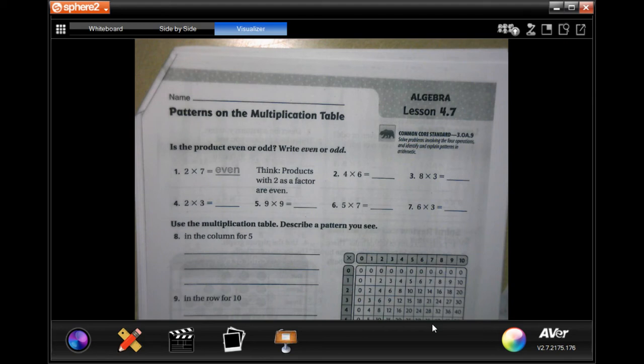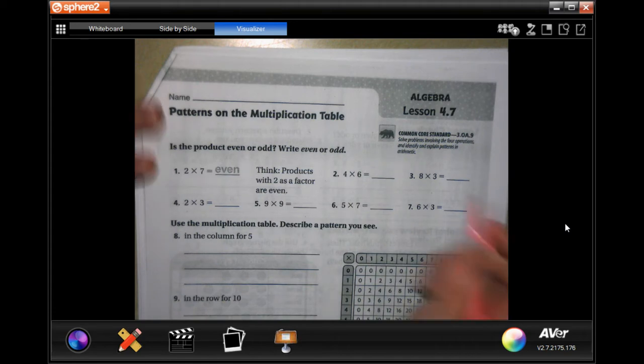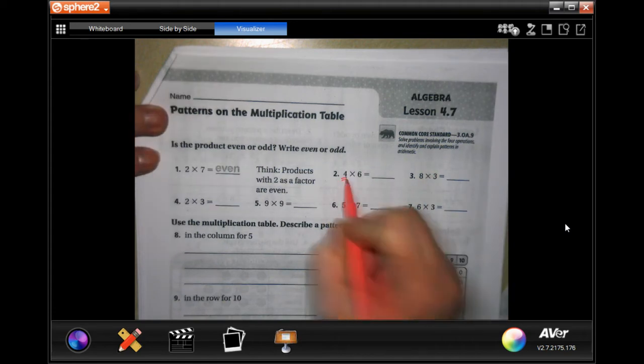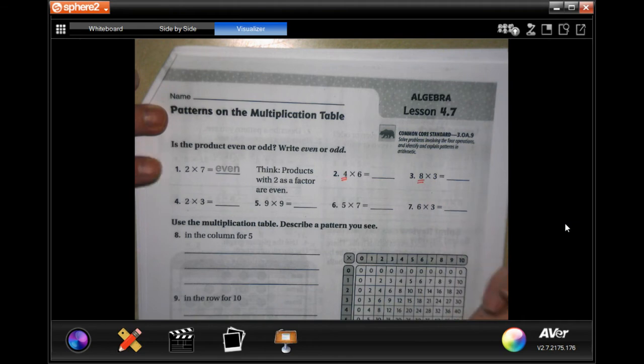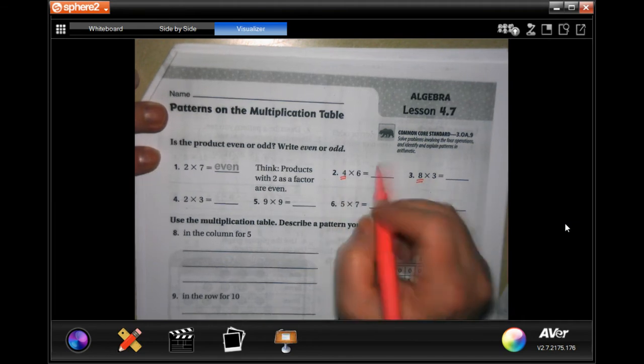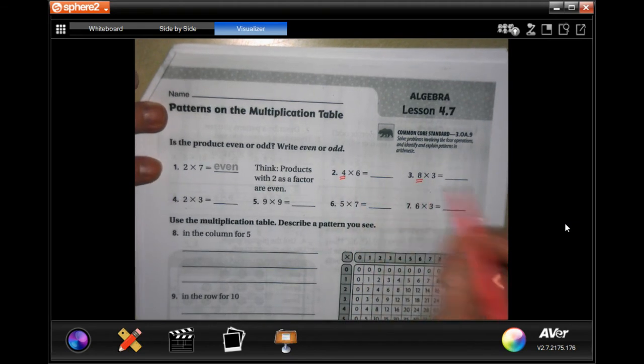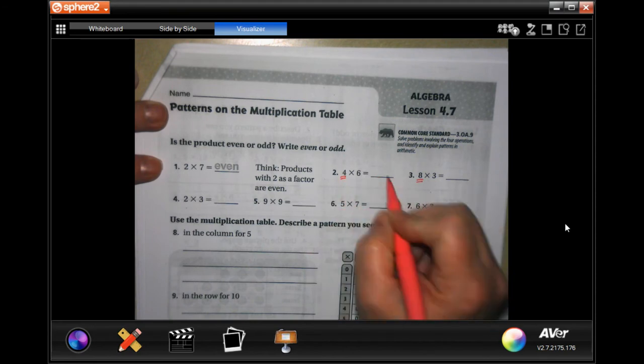Hey y'all, welcome to third grade chapter four lesson seven. We're going to get started. I'm going to give you guys a little trick to help you out with this. It wants to know if the product is even or odd. If even one of the numbers is an even number, it's going to be even every single time.